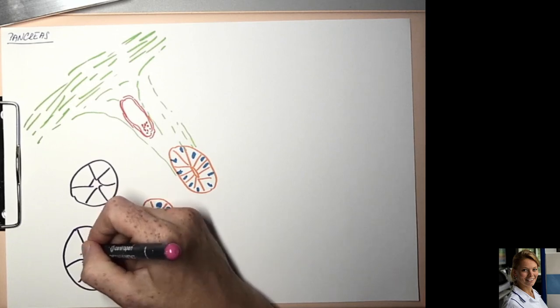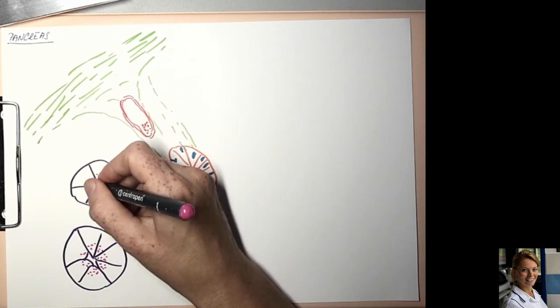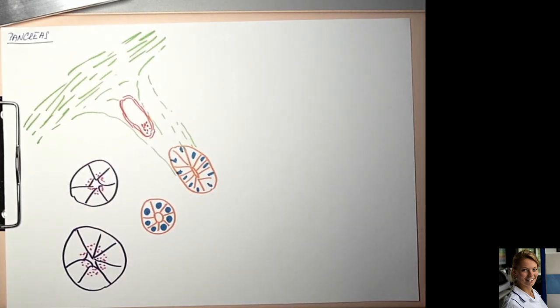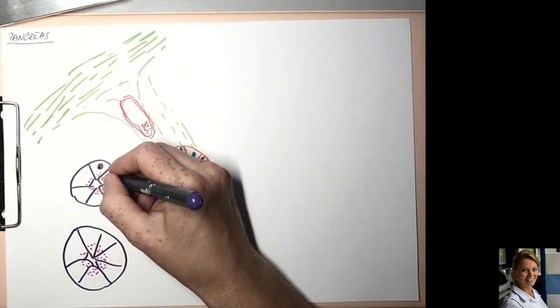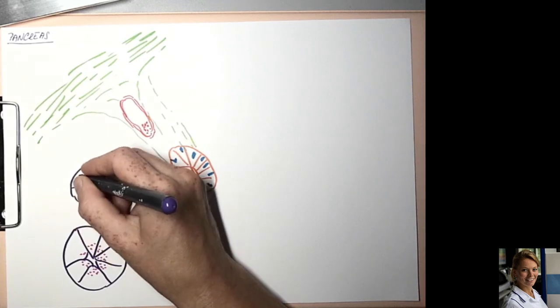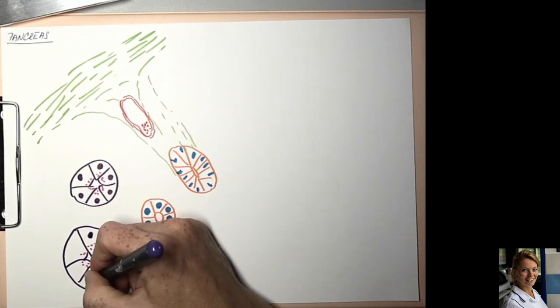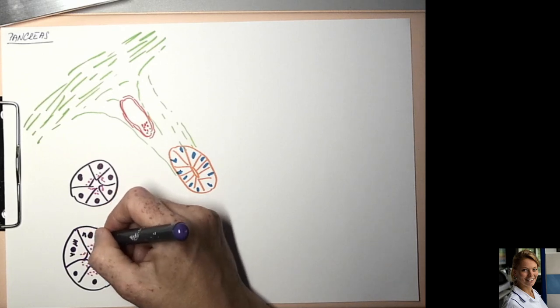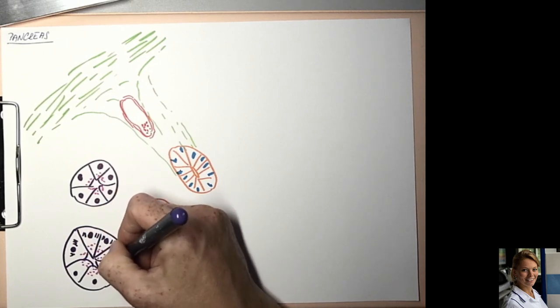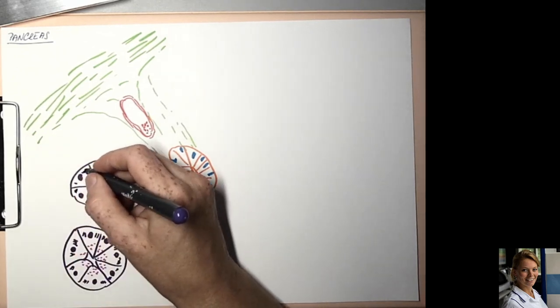But the basal part of the cell contains a large amount of endoplasmic reticulum and ribosomes and thus is basophilic. So around nuclei in the basal part of these cells is abundant rough endoplasmic reticulum and ribosomes. So these cells are basophilic.